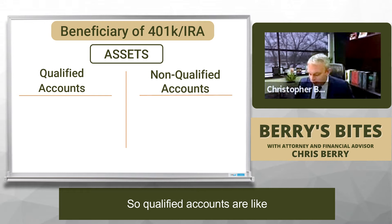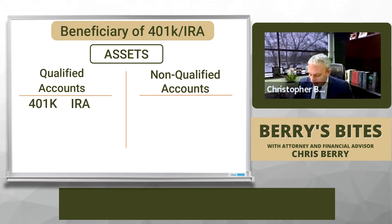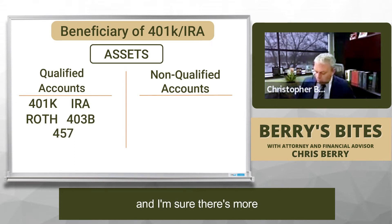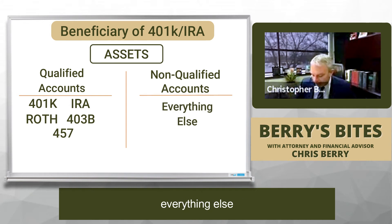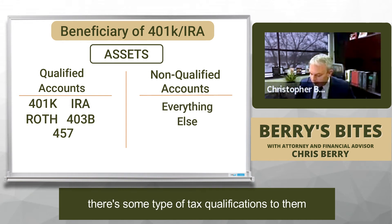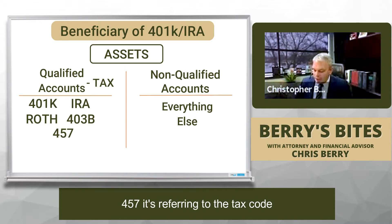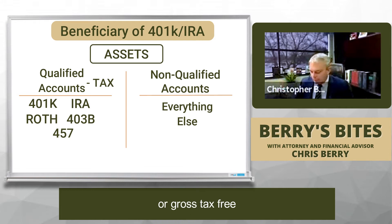Qualified accounts are like 401ks, IRAs, Roths, 403Bs, 457s, and more. Non-qualified is basically everything else. Qualified means there's some type of tax qualification to them — like a 401k or 457, it's referring to the tax code. And it could either be tax-deferred or grow tax-free.